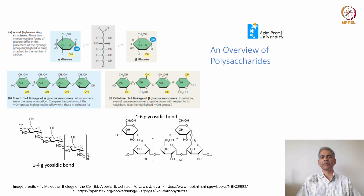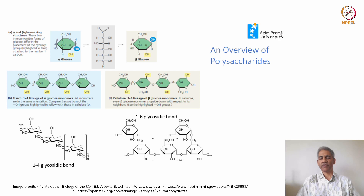Cellulose is made up of beta glucose monomers linking in the 1,4 glycosidic bond to give a linear polymer. In starch, the OH group on the second carbon is all on the same side of the plane of the molecule. Whereas in cellulose, every alternate glucose monomer is flipped such that the OH group is on opposite sides of the plane. This allows cellulose to make higher order structures, as each cellulose molecule can hydrogen bond with another, forming fibers of many linear polymers.